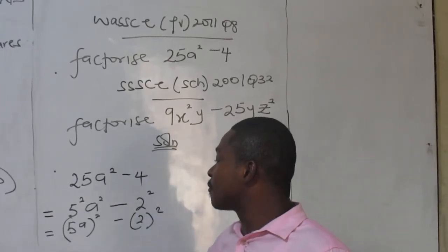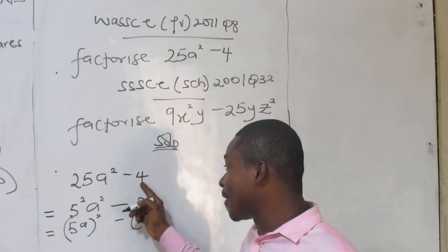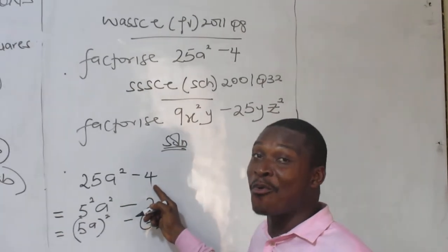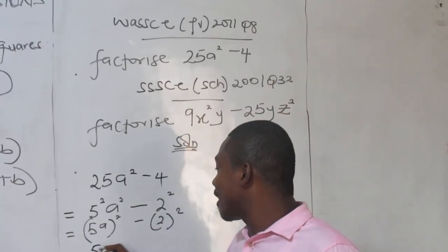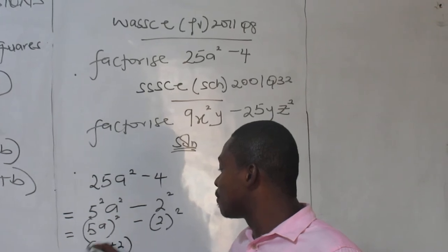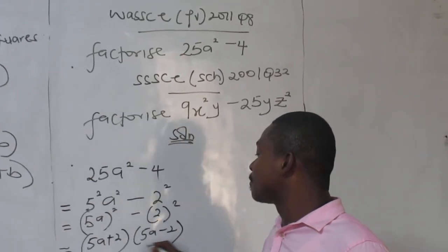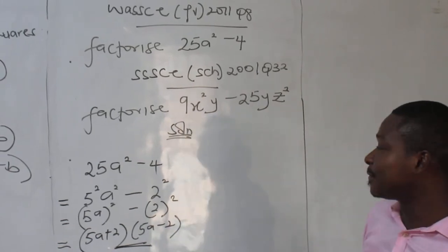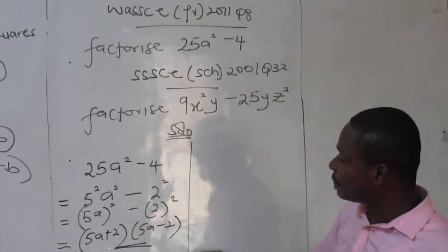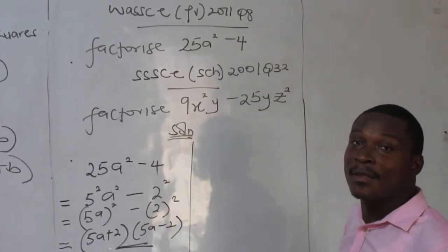Good. So you can have difference of two squares in disguise, as you can see. Good. Now, this is difference of two squares. You see, I really did something on the right. You can now see because it's not 1. So this is 5a plus 2. We have 5a minus what? 2. That is all.